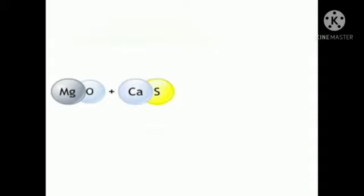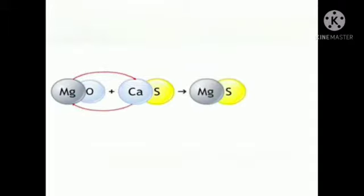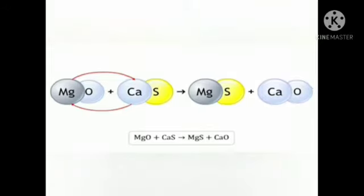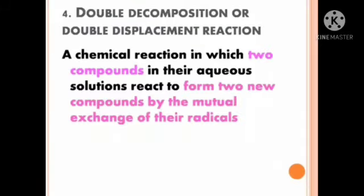For example, magnesium oxide reacts with calcium sulfide — MgO reacts with CaS. Mg comes in place of Ca and Ca comes in place of Mg. So when Mg comes in place of Ca, magnesium sulfide (MgS) is formed, and another compound CaO is formed. These new products are formed by exchanging their radicals — both reactants decompose and form new compounds by exchanging their radicals.